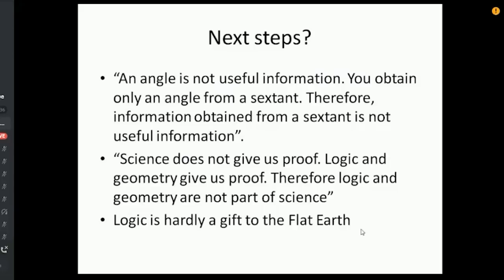Next steps, if any. Well, there are two other arguments I think we need to be thinking about or critiquing. One which you see quite often is, an angle is not useful information. That's my polite interpretation. I think the actual phrase is an angle tells you fuck all. But yeah, an angle is not useful information. You obtain only an angle from a sextant, therefore information obtained from a sextant is not useful information. Interesting argument, interesting to look at. There is also another one that you see frequently around the word proof. So science does not give us proof. Some globers say that. I'm not sure about that, but let's assume that's true. Logic and geometry give us proof. Yeah, because Euclidean geometry is entirely logical. Therefore logic and geometry are not part of science. Okay, well that's not a valid argument to start with, and I need to understand that argument better. But there are two possible lines of critique for the sort of arguments that you commonly see.